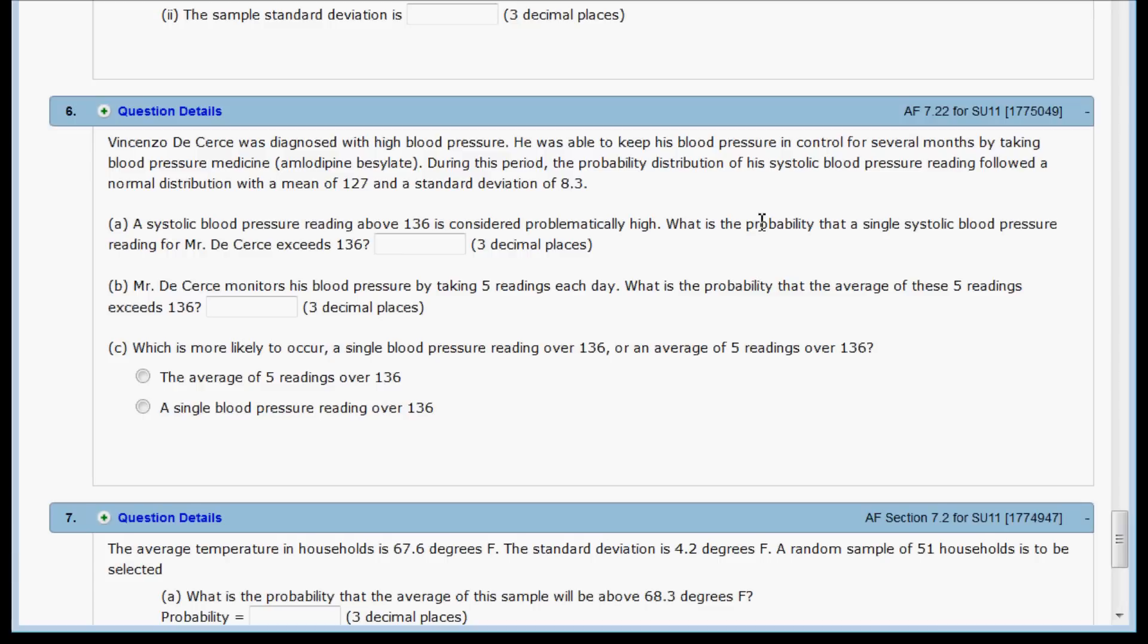Question A asks about the probability that a single observation exceeds 136. B says what is the probability that the average of 5 readings exceeds 136, so here just a single reading, here an average of 5, and we'll talk about C in a second.